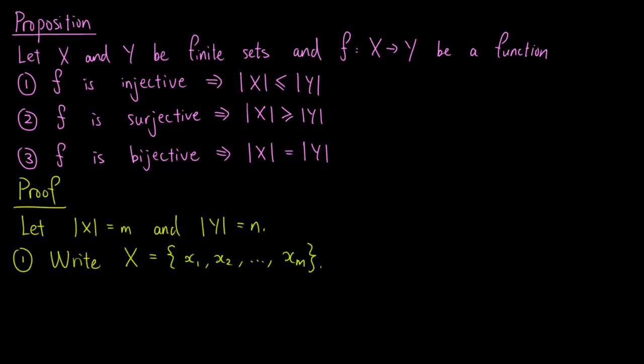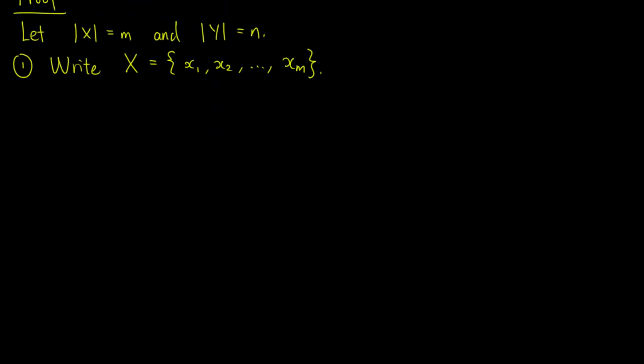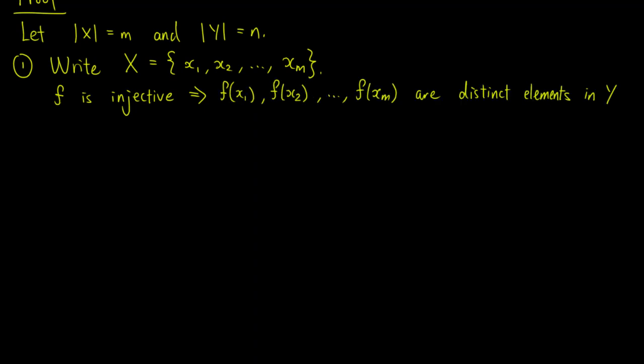For the first point, we list the elements of X as x1, x2, up to xm. f being injective implies that f of x1, f of x2, up to f of xm are distinct elements in Y. This means that Y must contain at least m elements. In other words, m is less than or equal to n.